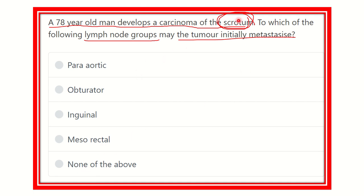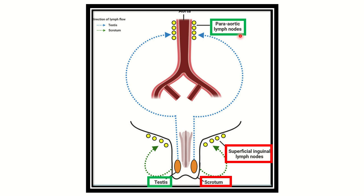The scrotum covers the testes — in the back of the scrotum there are the testes located. Here in this picture we can see the penis and here is the scrotum. On either side there are two sides of the scrotum, and we can see that from the scrotum the lymphatic drainage goes into this group — the superficial inguinal lymph node group. The scrotum is the skin and some other layers, and they drain into the superficial inguinal lymph node.